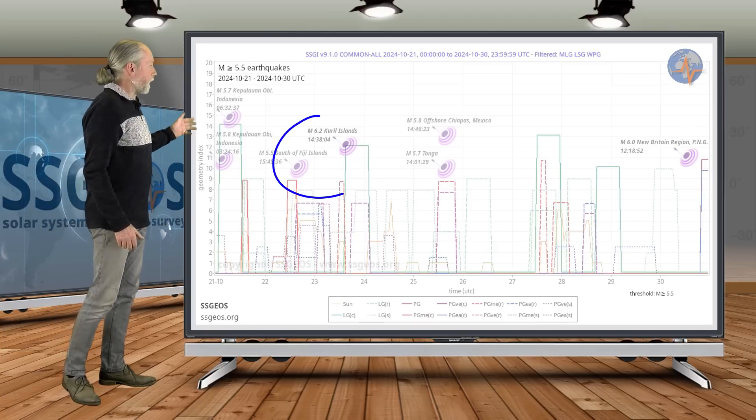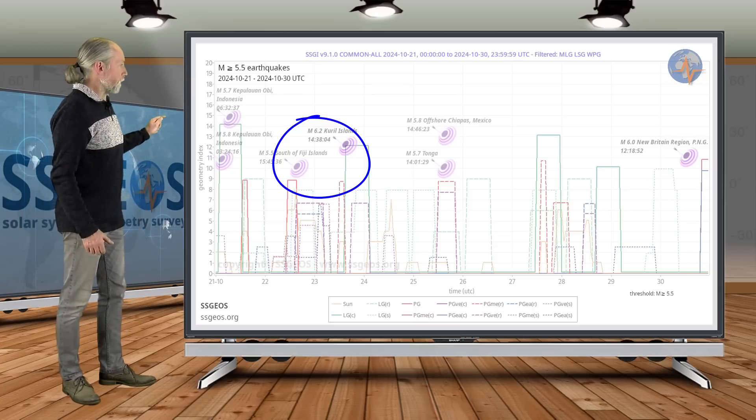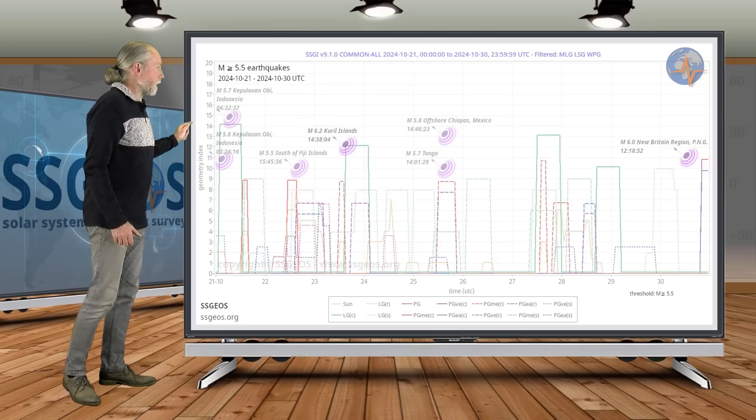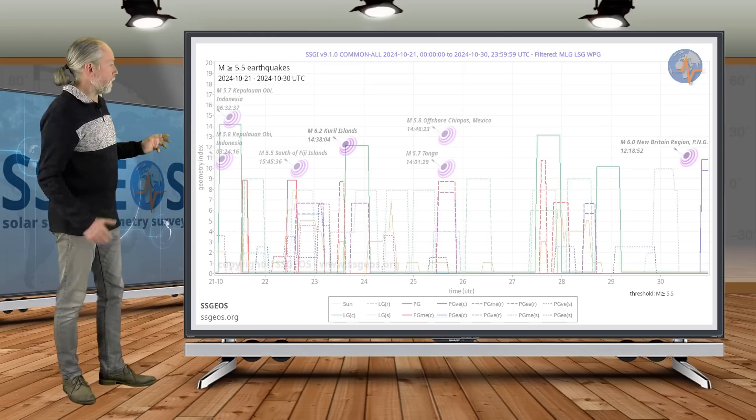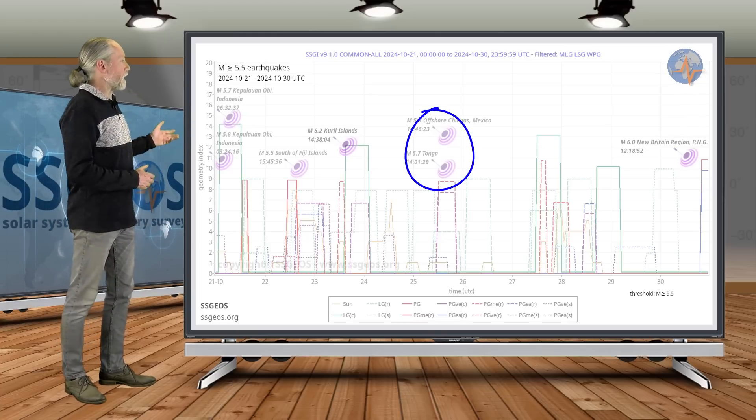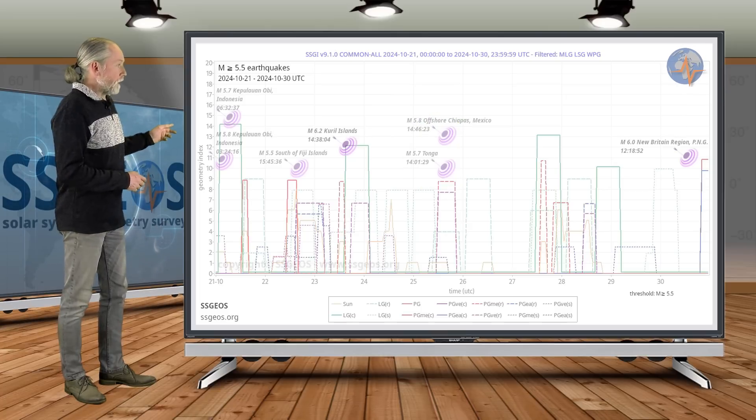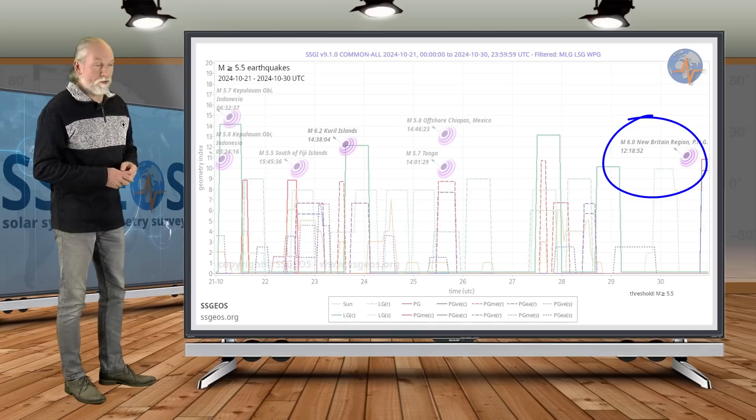Then we see a 5.5 and a 6.2, the largest seismic event actually, on the 23rd in the Kuril Islands. We had minimal clustering on the 25th with a 5.7 at Tonga and a 5.8 offshore Chiapas, Mexico. Also today a magnitude 6 earthquake at New Britain region.